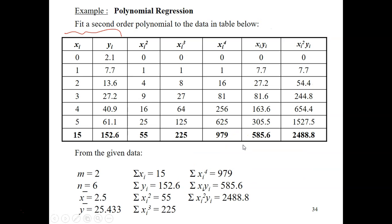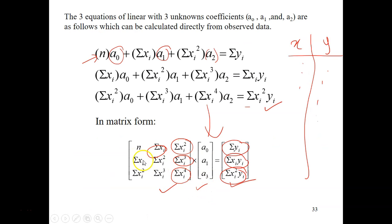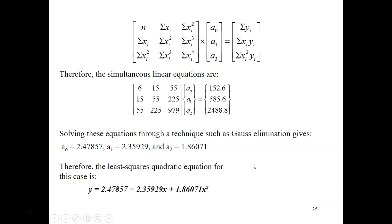You need seven values in total, adding columns for x squared, x cubed, x to the power of 4, x times y, and x squared times y. M is the order of the equation — here it's second order. N is the number of data which is 6. The rest of the values are taken from the table, and you substitute them all into the matrix form.